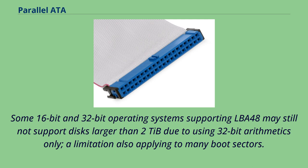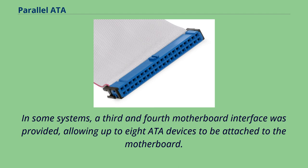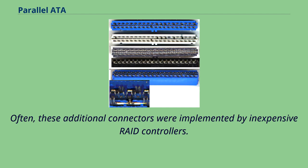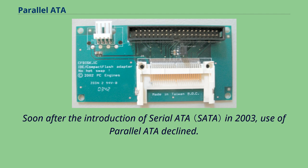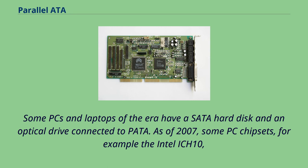Parallel ATA became the primary storage device interface for PCs soon after its introduction. In some systems, a third and fourth motherboard interface was provided, allowing up to eight ATA devices to be attached to the motherboard. Often, these additional connectors were implemented by inexpensive RAID controllers. Soon after the introduction of Serial ATA in 2003, use of Parallel ATA declined. The first motherboards with built-in SATA interfaces usually had only a single PATA connector, along with multiple SATA connectors. Some PCs and laptops of the era have a SATA hard disk and an optical drive connected to PATA. As of 2007, some PC chipsets, for example the Intel ICH-10, had removed support for PATA.